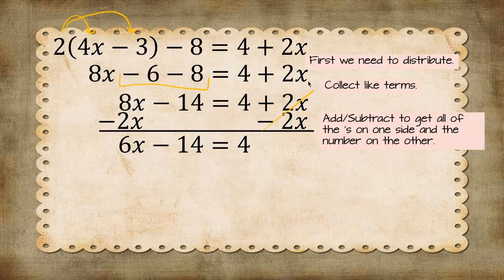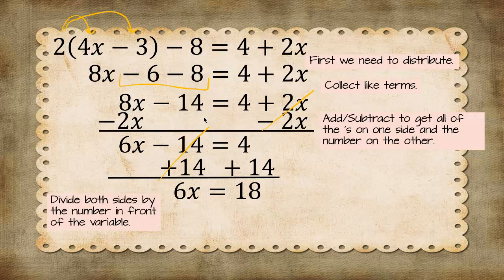Our next step is to get 6x by itself. So I added 14 to both sides. We end up with 6x equals 18. Remember negative 14 plus 14 is 0. Our final step is to divide both sides by the number in front of the variable. The number in front of our variable is 6, so we're going to divide by 6 and it turns out that x equals 3.